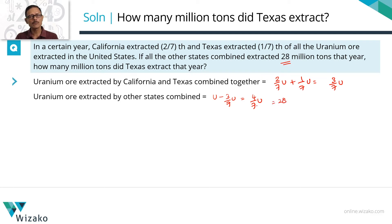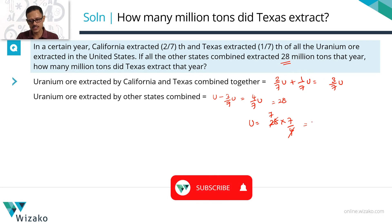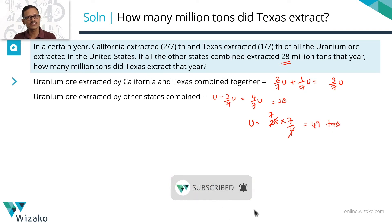So four sevenths times U is equal to 28. Cross multiplying by seven fourths, U is equal to 28 times seven fourths. The 28 and 4 cancel to leave us with a seven, so the total quantum extracted is seven times seven, which is equal to 49 million tons.